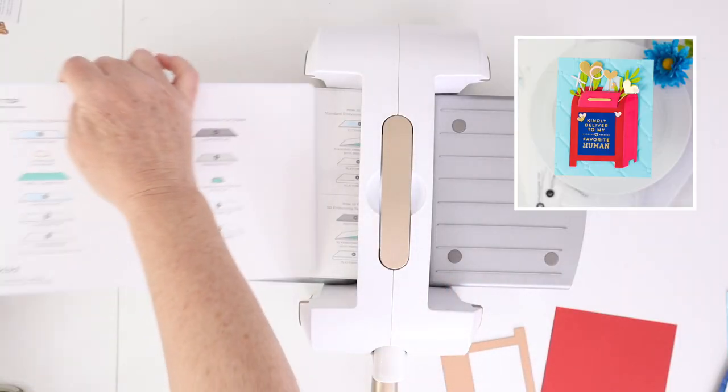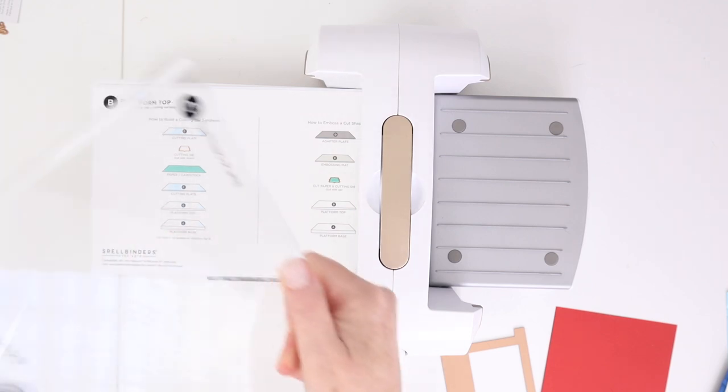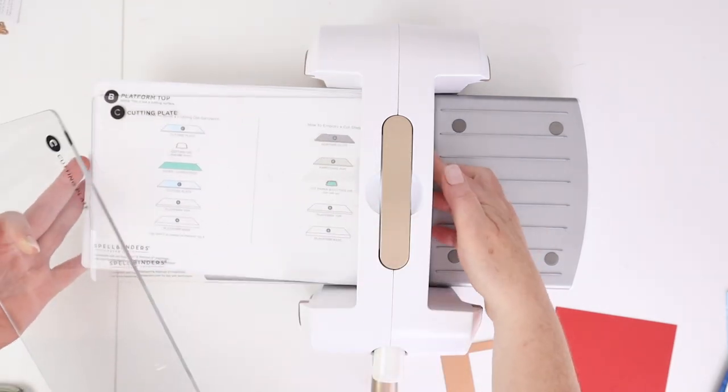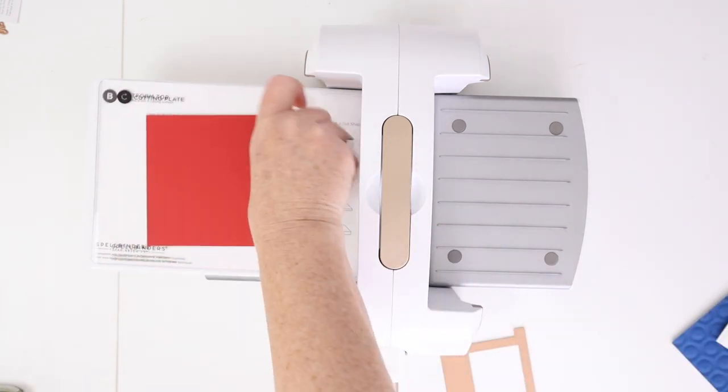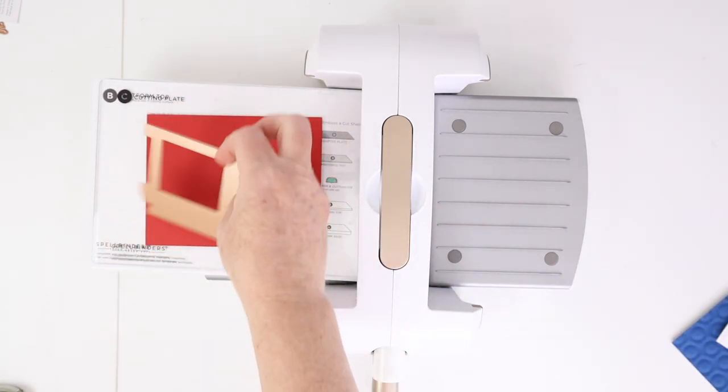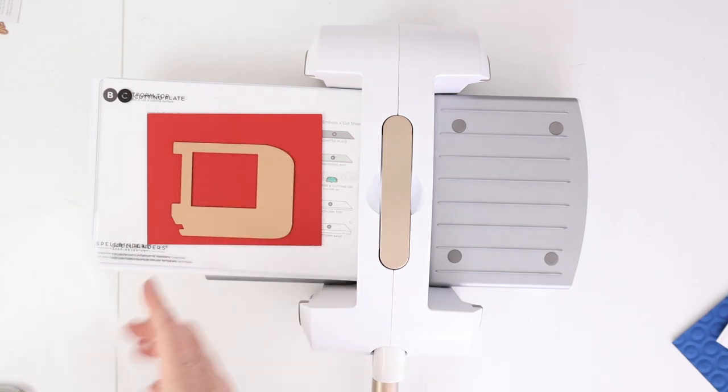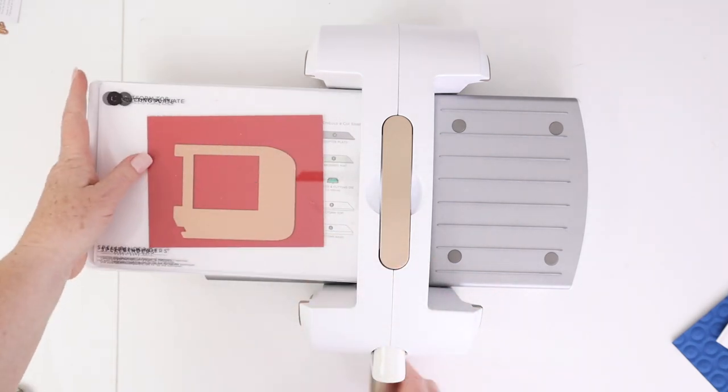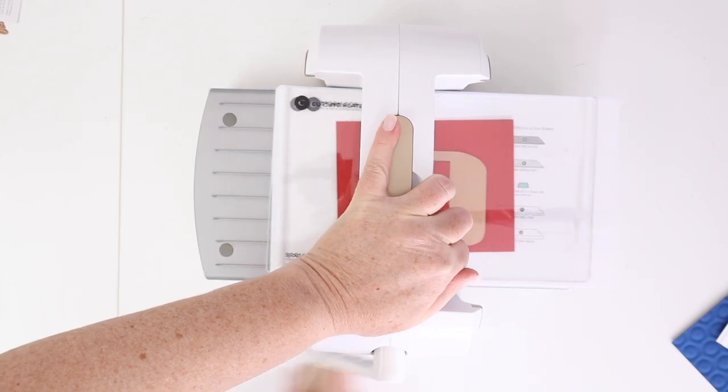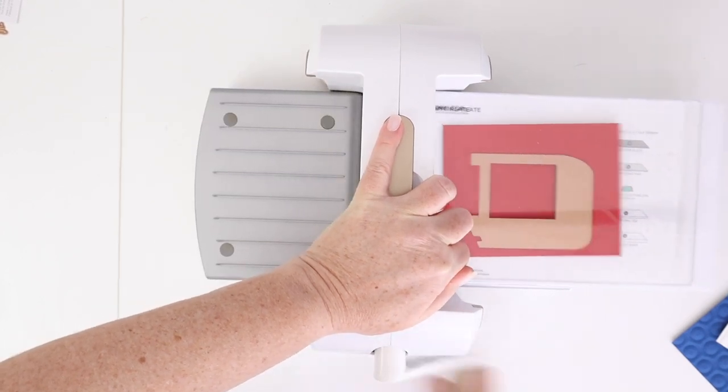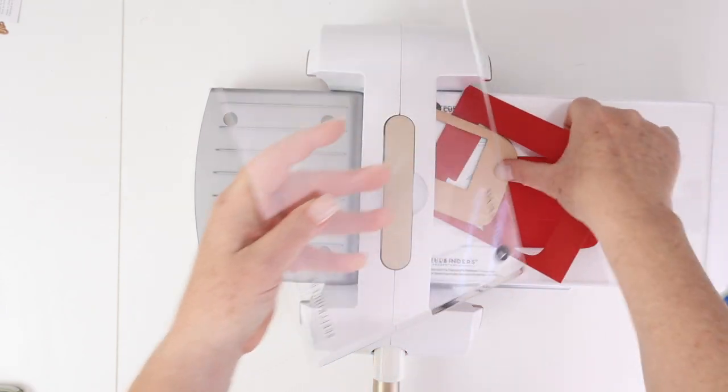Okay, to do your die cutting, you want your platform bottom, your platform top, your clear cutting plate, and then you're going to put your paper or your cardstock down. And then you're going to put your die down with the cutting side facing down, and then another cutting plate on top. And again, super easy to roll this through to crank the handle and to get a beautiful, smooth die cut.